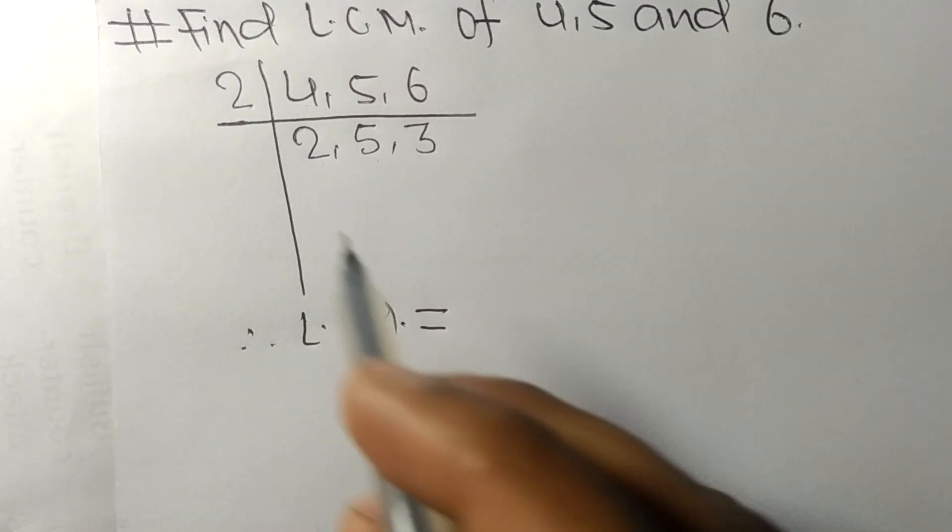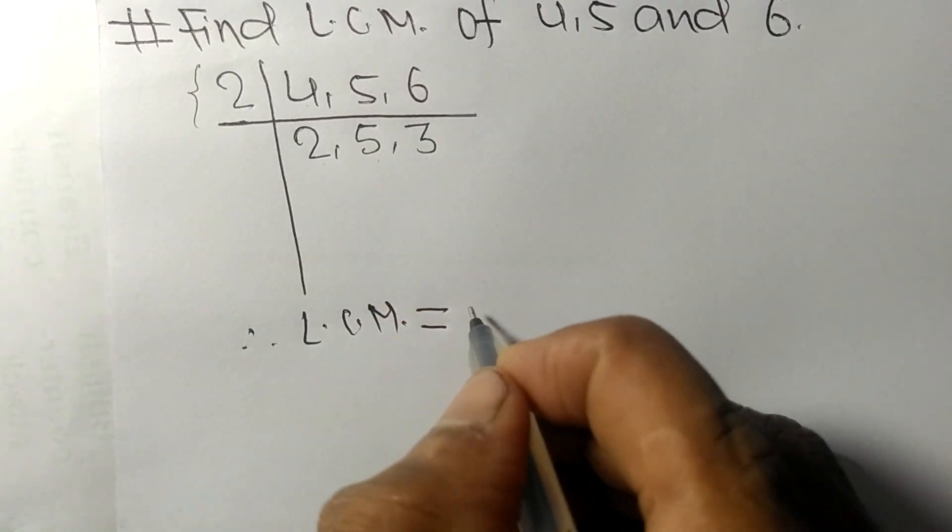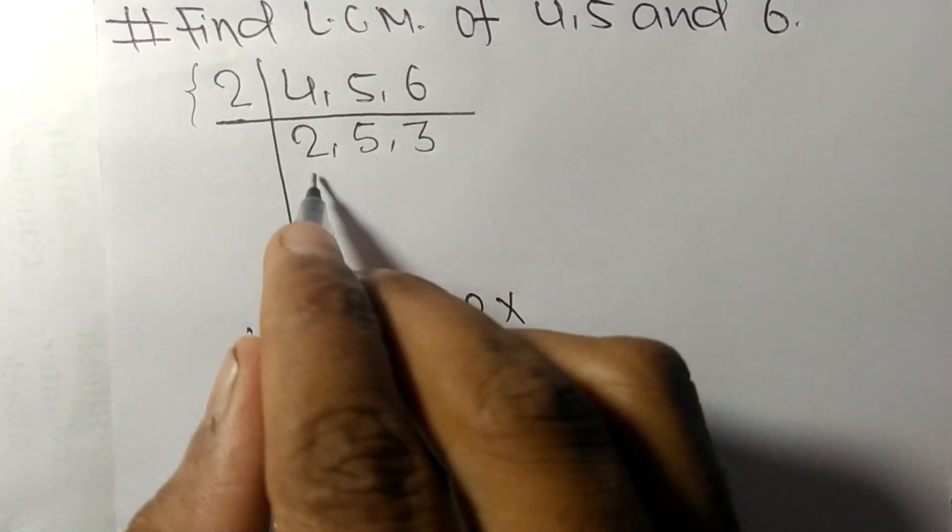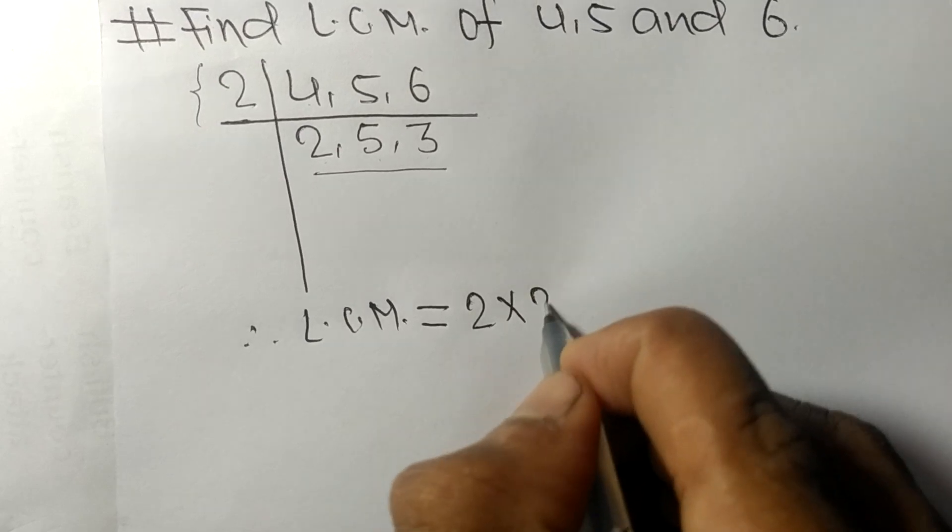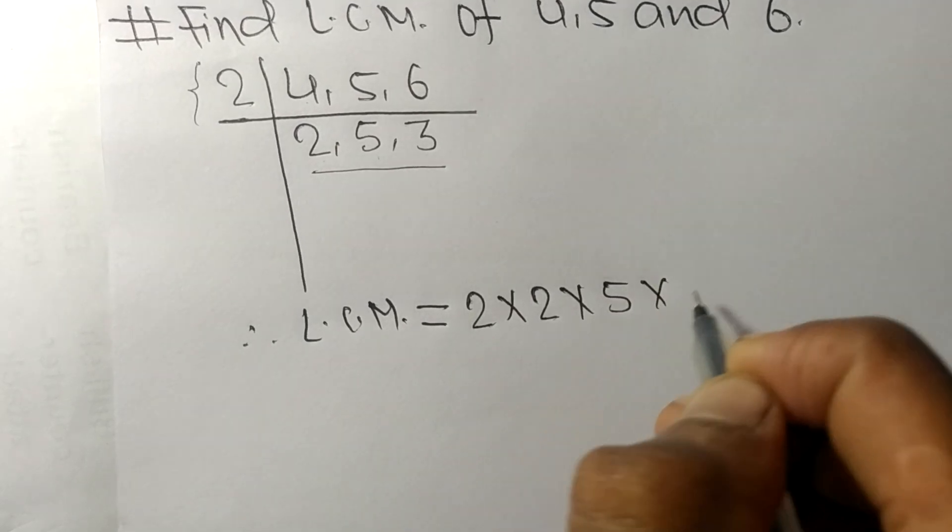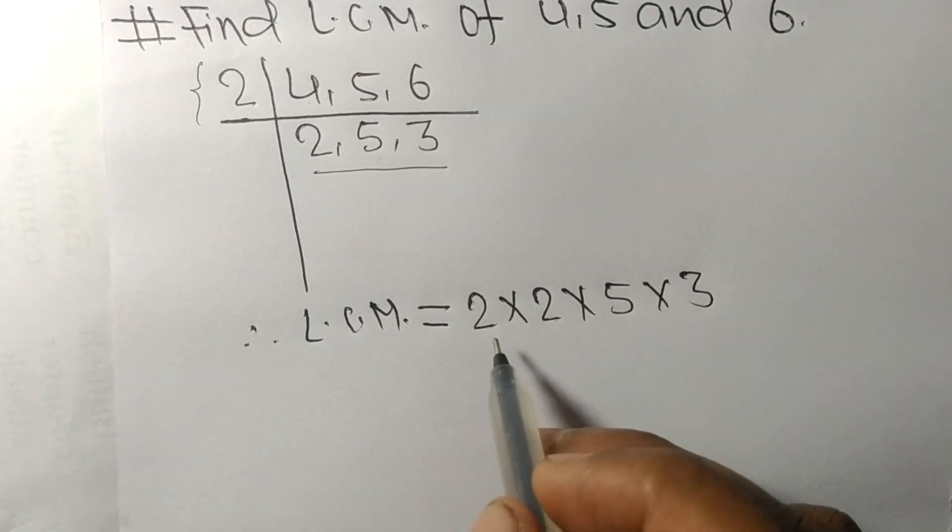is equal to: from this side it is 2, from here we get 2 times 5 times 3. So 2...